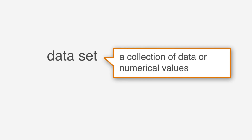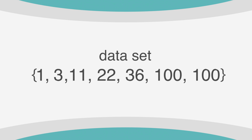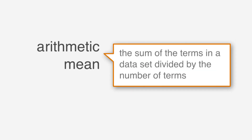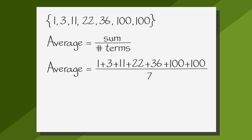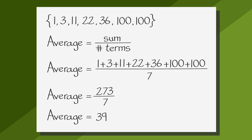Let's do a quick review before we jump in. A data set is a collection of data or numerical values. This particular data set is organized from least to greatest, starting with the smallest number, 1, and working up to the largest number, 100. The arithmetic mean, which is a fancy name for the average, is the sum of the terms in a data set divided by the number of terms. Expressed as a formula: average equals sum over number of terms. In this data set with 7 terms, we get average equals 1 plus 3 plus 11 plus 22 plus 36 plus 100 plus 100, over 7, which gives us 273 over 7, and the average equals 39.